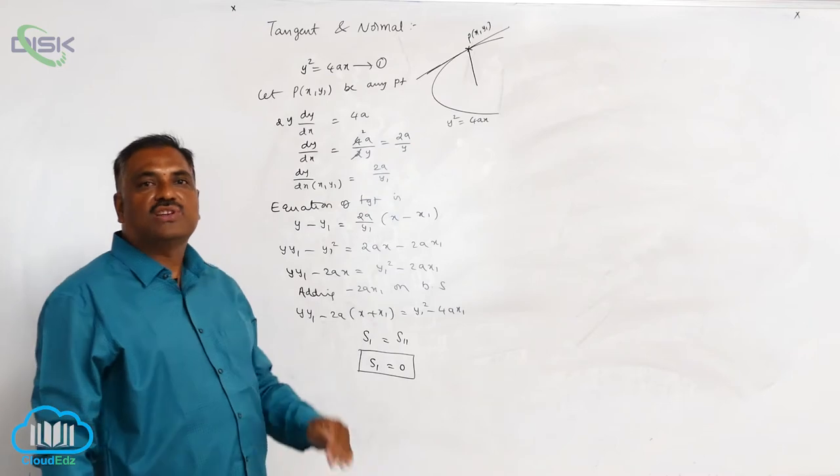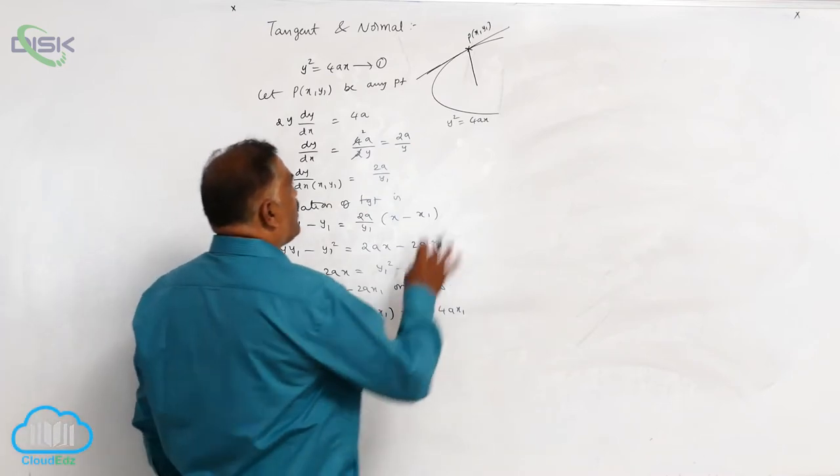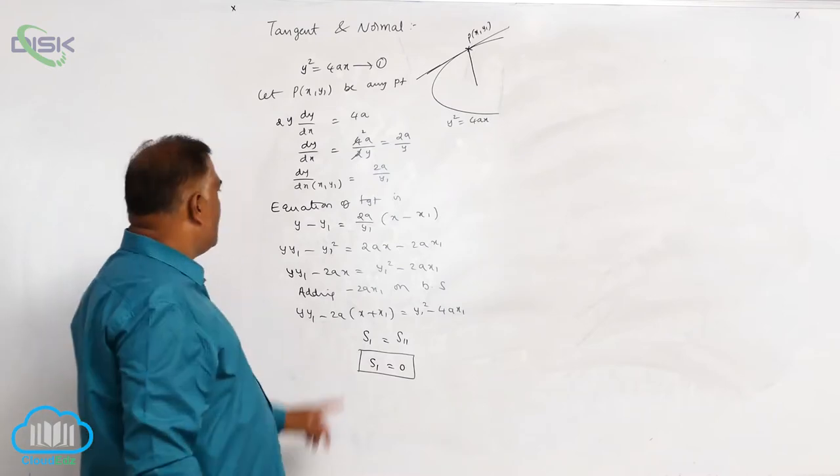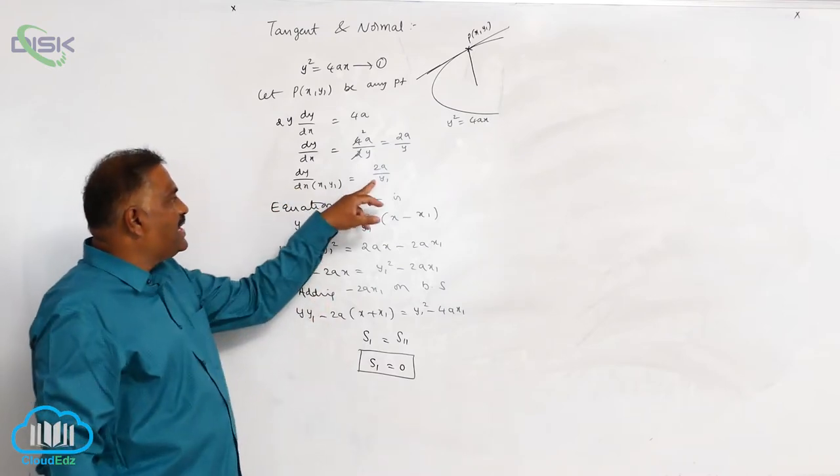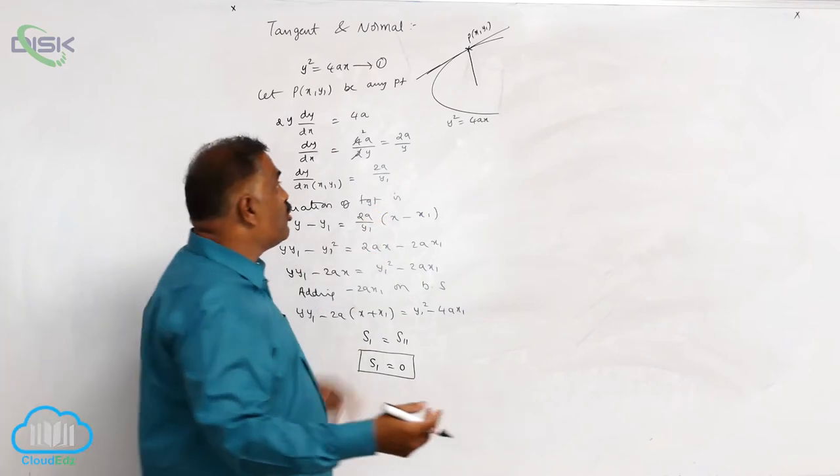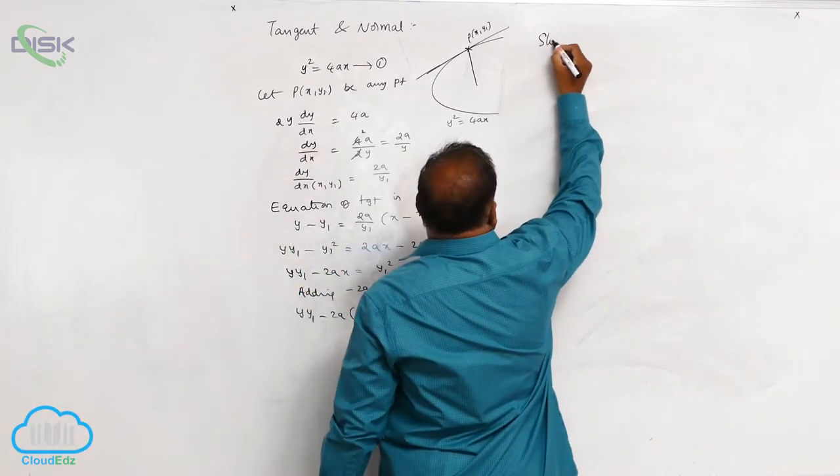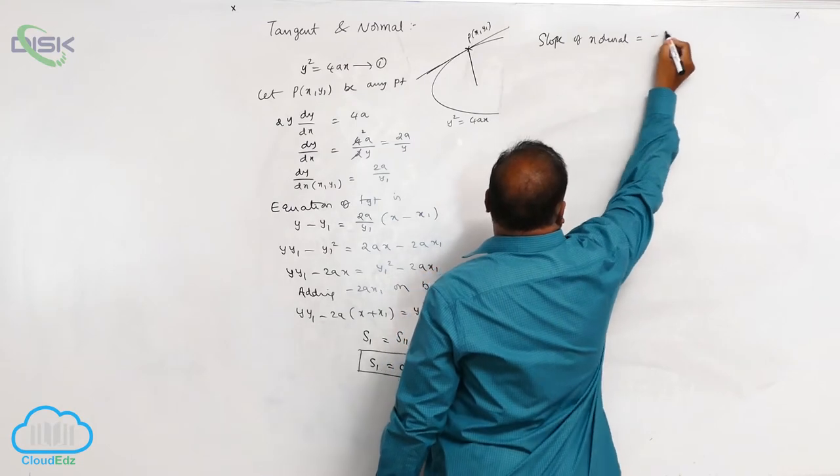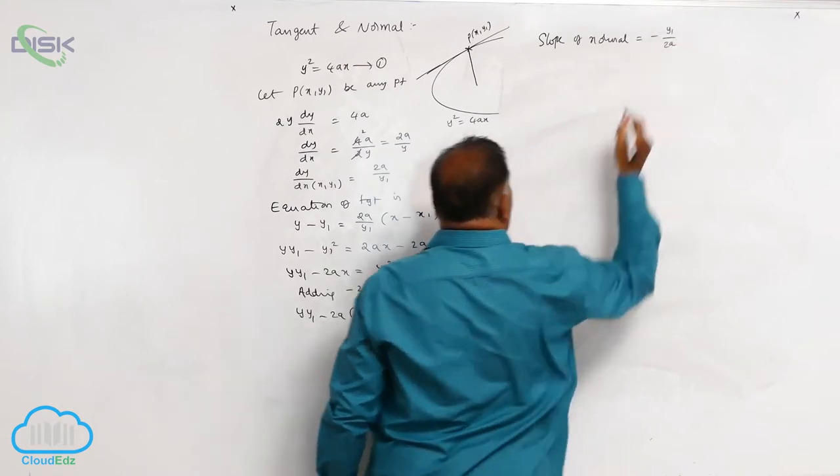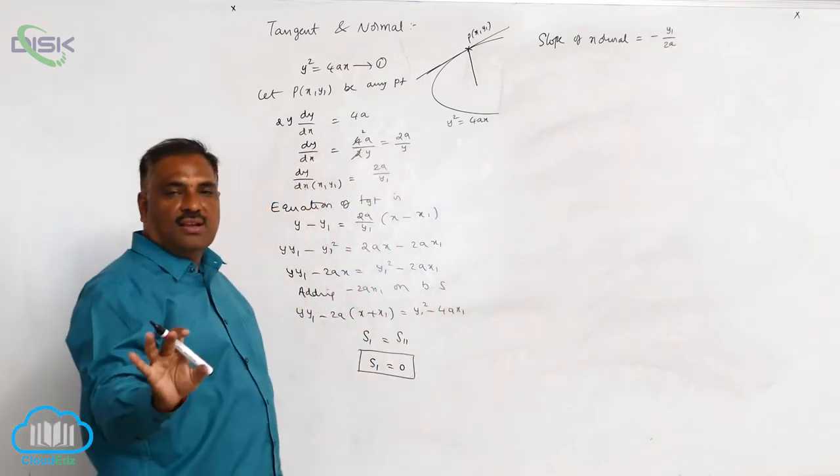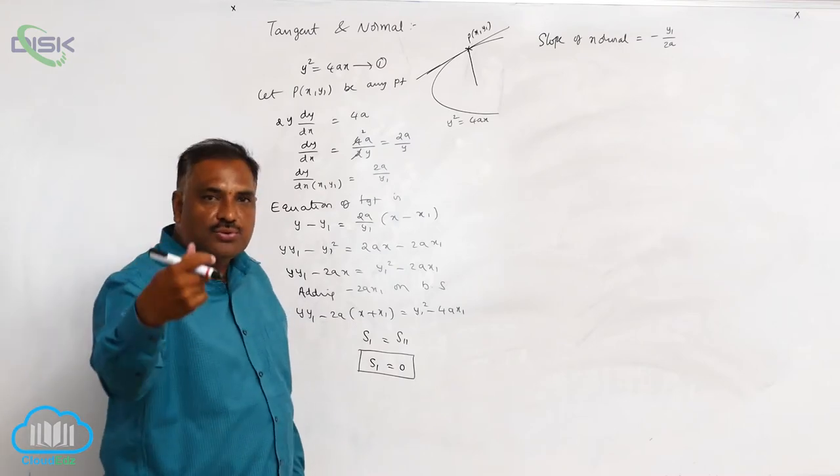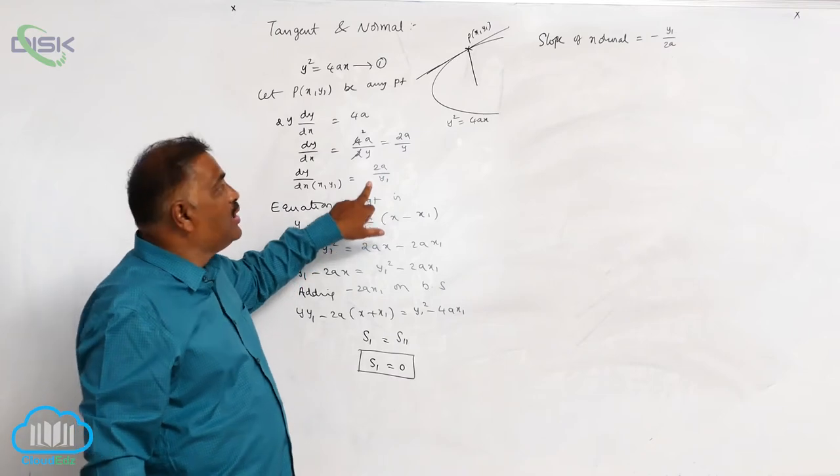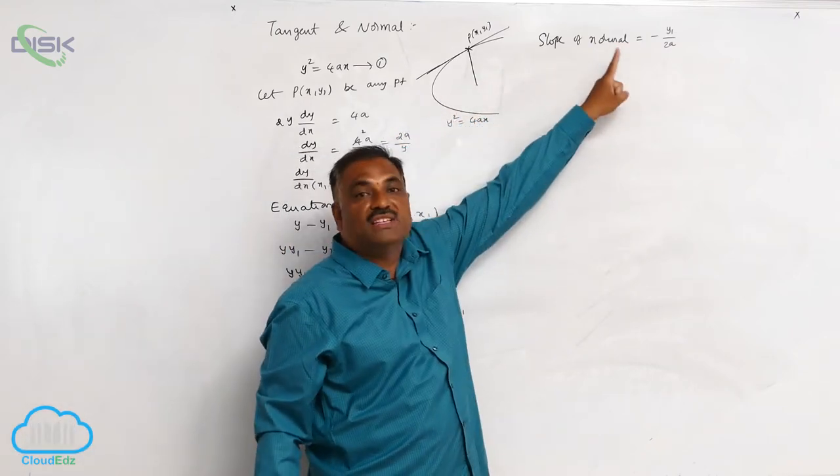Let us discuss the equation of normal. To find out the normal, we require the slope of normal. We know that the slope of tangent is 2a by y1. Slope of normal is given by minus y1 by 2a. Since we know that tangent is perpendicular to normal, slope of tangent is 2a by y1 and slope of normal is minus y1 by 2a.